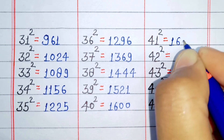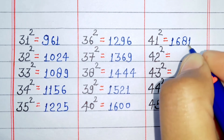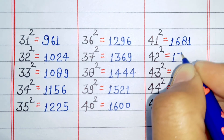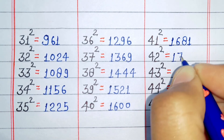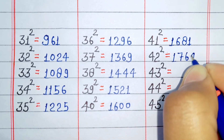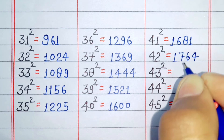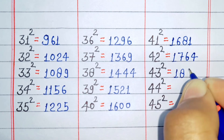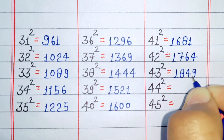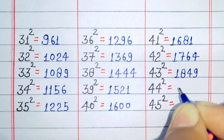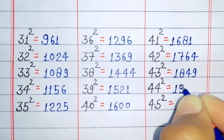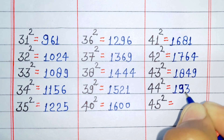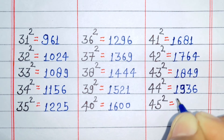Square of 41 is 1661. Square of 42 is 1764. Square of 43 is 1849. Square of 44 is 1936.